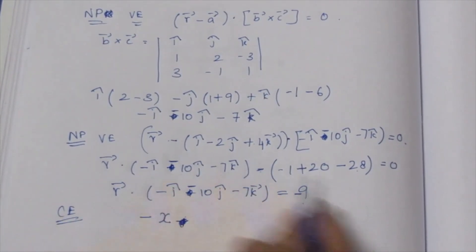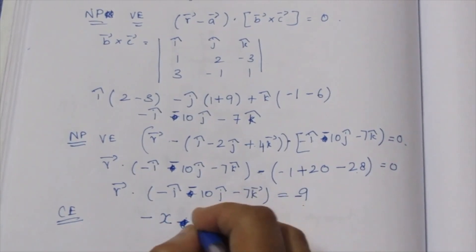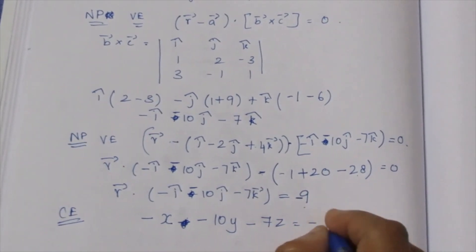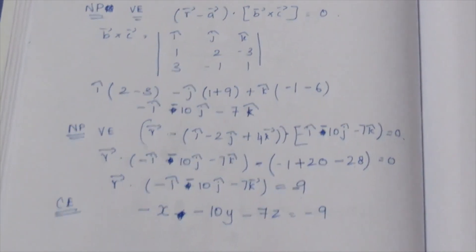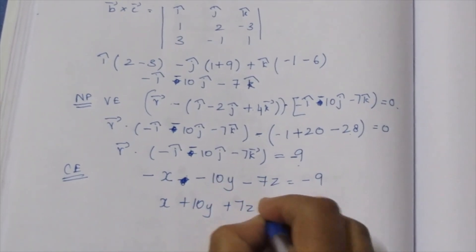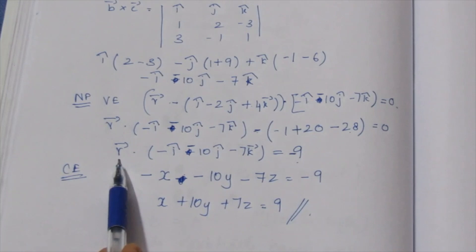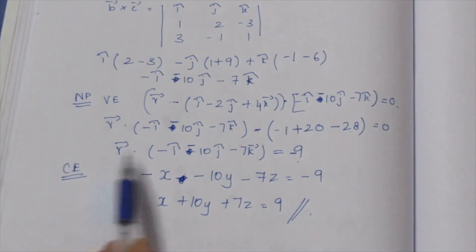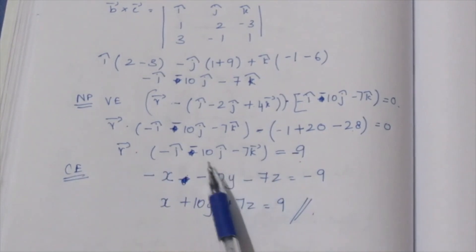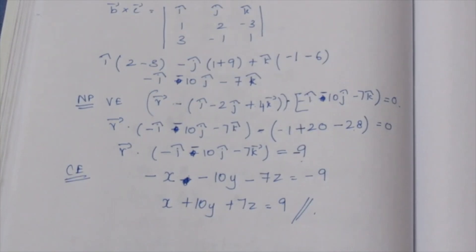The result gives us minus x plus 7z equals 9. Multiplying through with r-vector as x·i-cap plus y·j-cap plus z·k-cap, we can write the Cartesian equation in x, y, z. That's the sum — thank you.